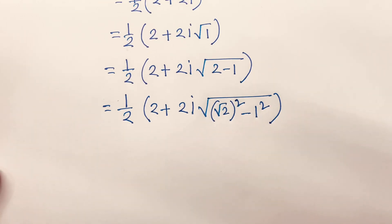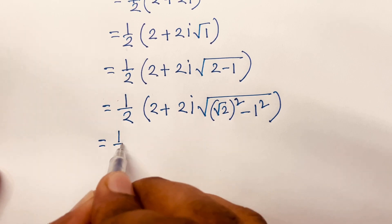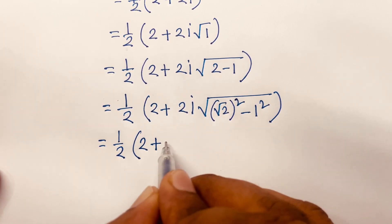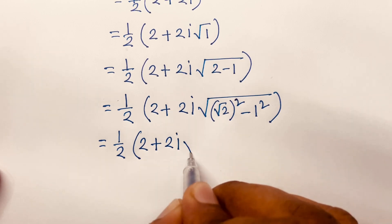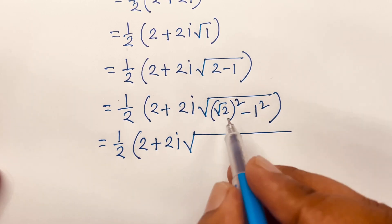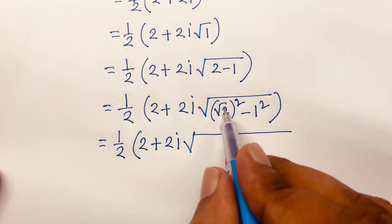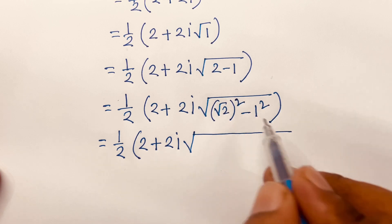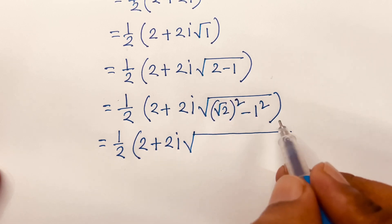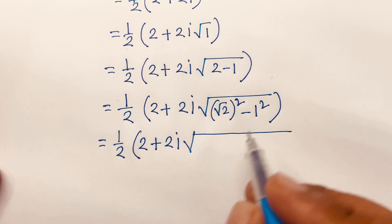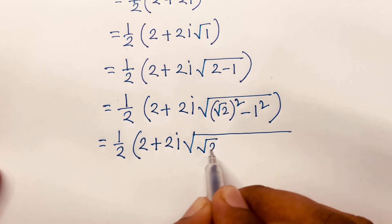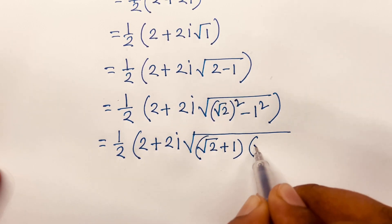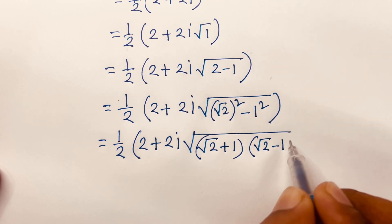Now, I can say here is 1 over 2 times 2 plus 2i, square root down. Look, here is a² minus b². We know that a² minus b² equals (a+b)(a−b). According to this rule, I can say here is square root of (√2 + 1) times (√2 − 1).